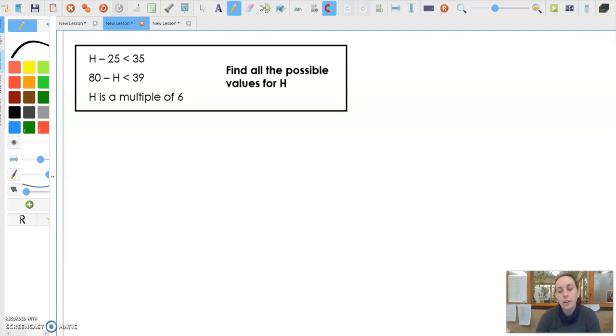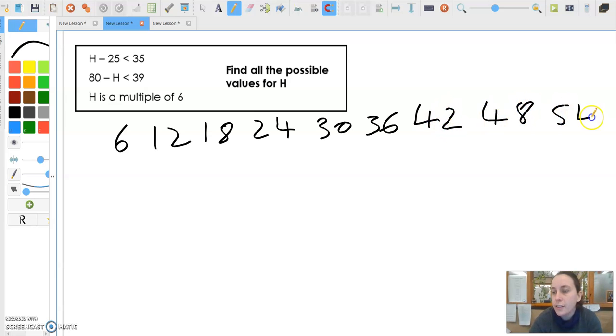H is a multiple of 6. So what I'm going to do is I'm going to write out all my multiples of 6: 6, 12, 18, 24, 30, 36, 42, 48, 54, 60, 66, 72. That'll do for now. If I need to do any more, I'll do some more later. So write out all your multiples.